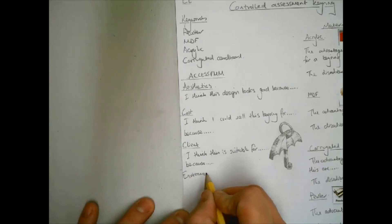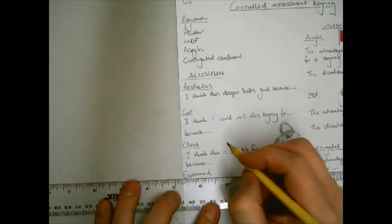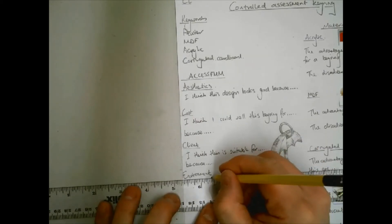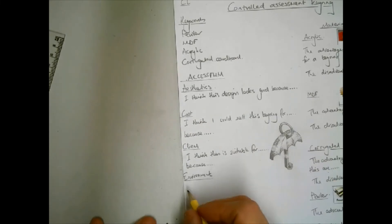The fourth letter is E. This stands for environment. Things that need to be considered at this stage are things like the six R's. This stands for recycle, reduce, rethink, repair, reuse, and refuse.